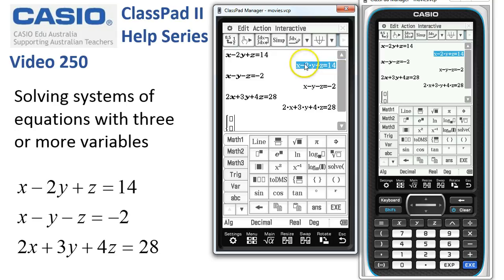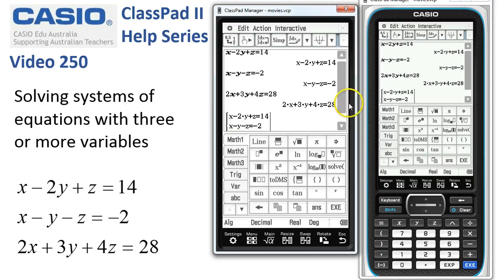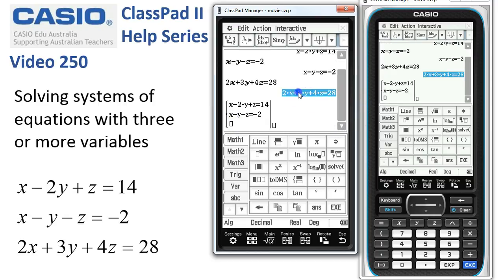So let's take a copy of this one and put it into the top box. A copy of this equation and put it into the second line. And finally our third equation goes into the third line.